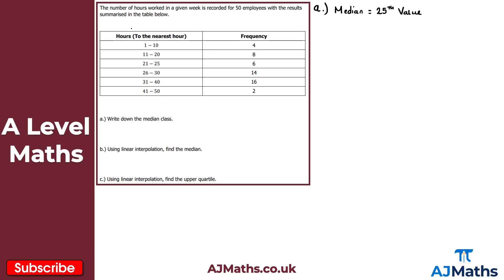We need to consider each class interval cumulatively to find where the 25th value falls. The first class interval has 4 values, the second has 8, giving 12 total for the first two. The third class interval has 6 values, giving 18 for the first three. The fourth class interval has 14 values, giving a cumulative total of 32. So the 25th value must fall within the fourth class interval.